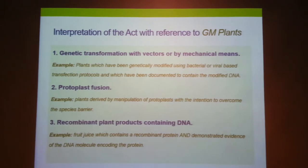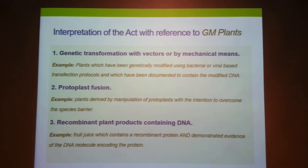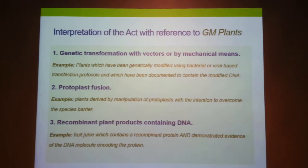Protoplast fusion — taking two plant cells and fusing them after removing the cell wall — is also considered GM. Recombinant plant products containing DNA also fall under this category. For example, if a fruit contains recombinant DNA, you must refer back to the biosafety act and get permission for marketing that fruit locally. For instance, if you inserted a gene of animal origin into a fruit, vegetarians may take offense at the fact that it has been modified with an animal protein.